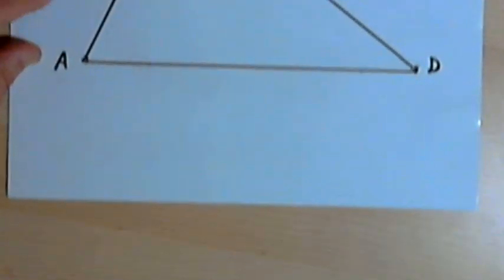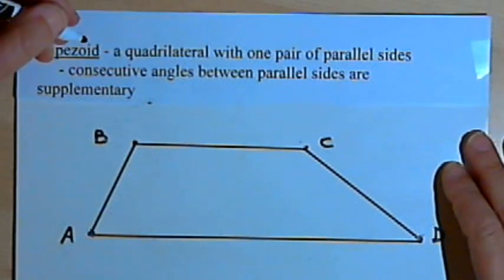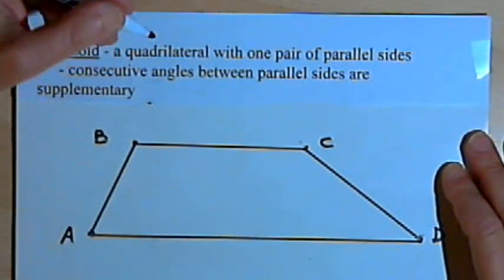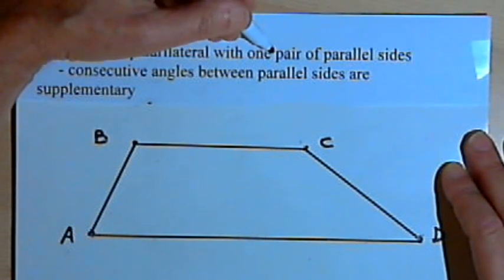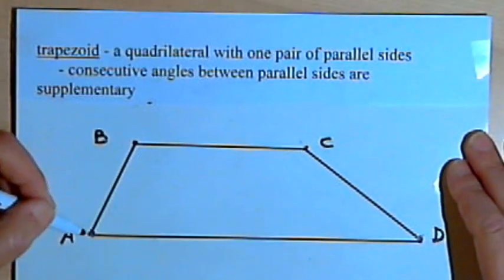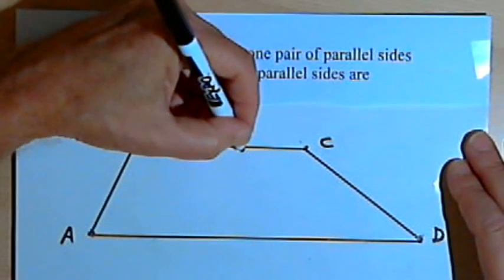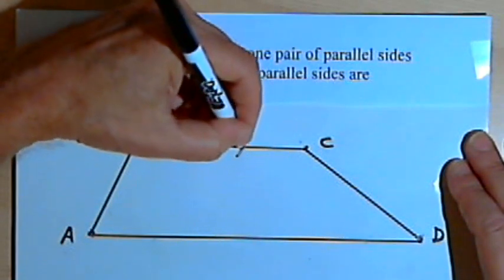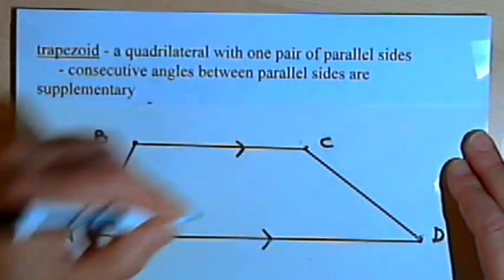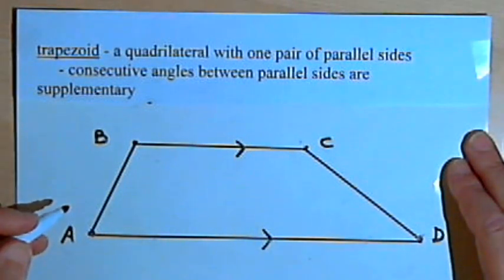So let's start with the definition of a trapezoid. A trapezoid is a quadrilateral — a four-sided figure — and it's got one pair of parallel sides. I've drawn a quadrilateral, a four-sided figure, that I've labeled ABCD, and I'm going to mark side BC as being parallel to side AD. So this is a trapezoid.